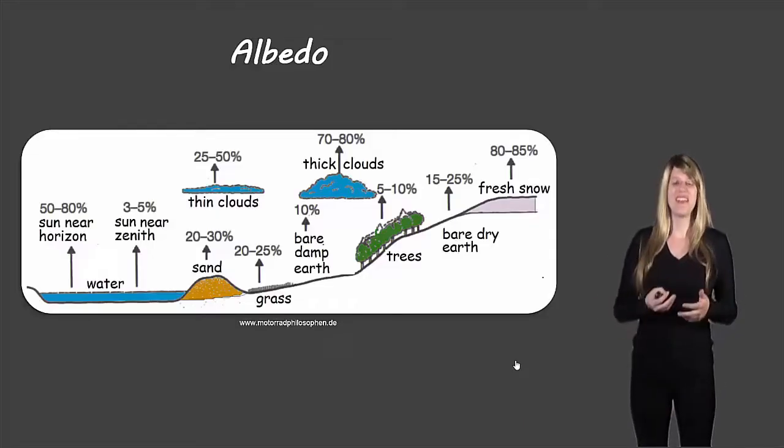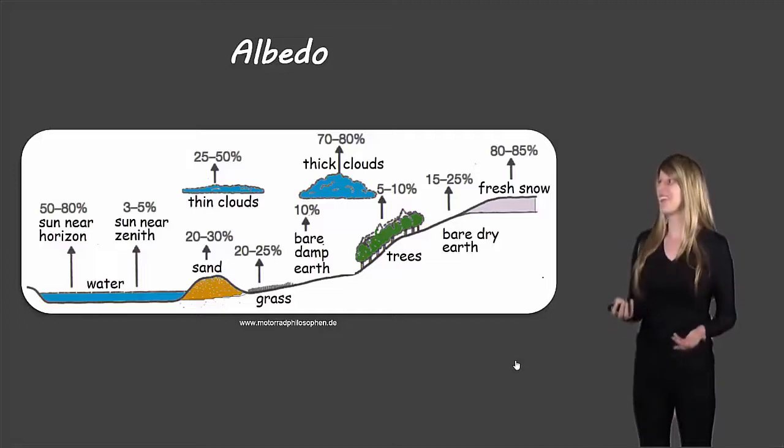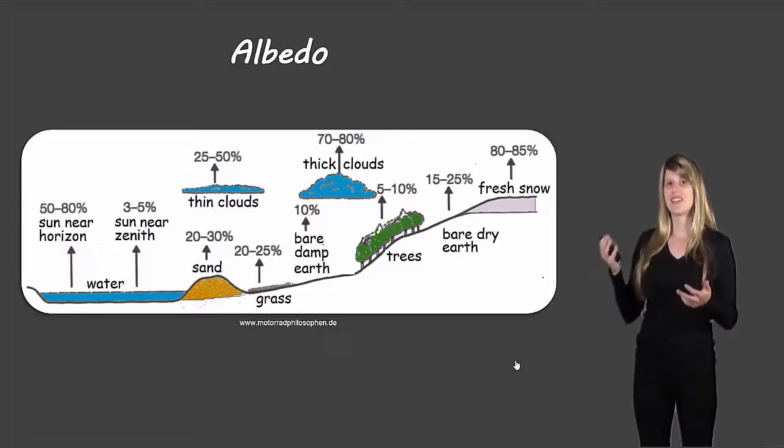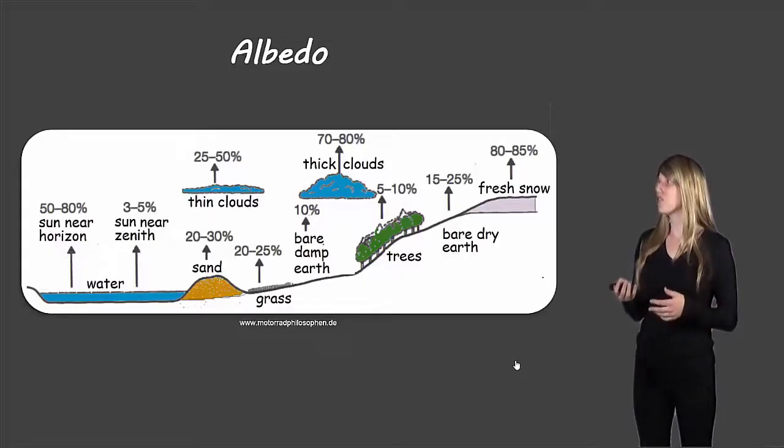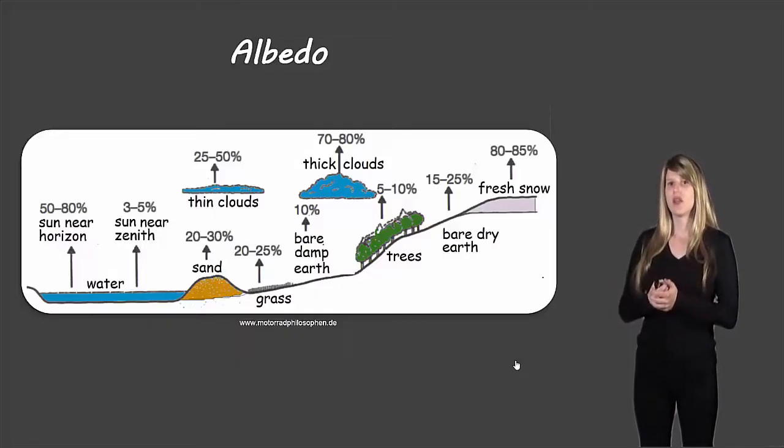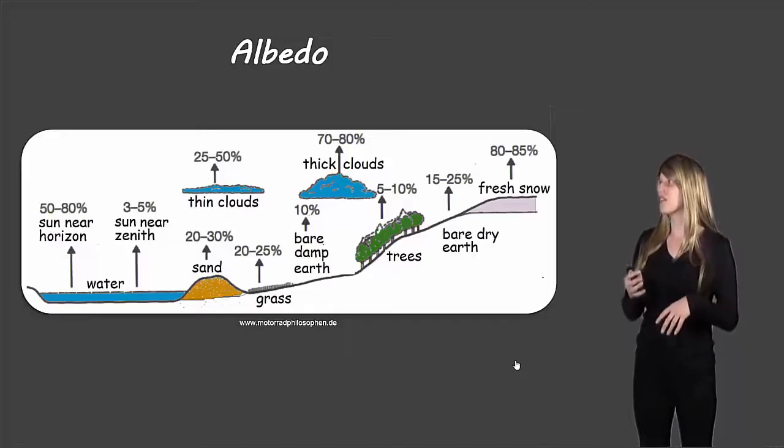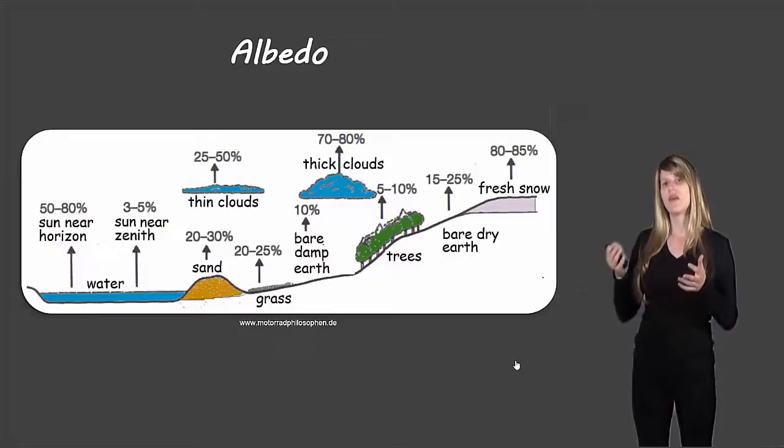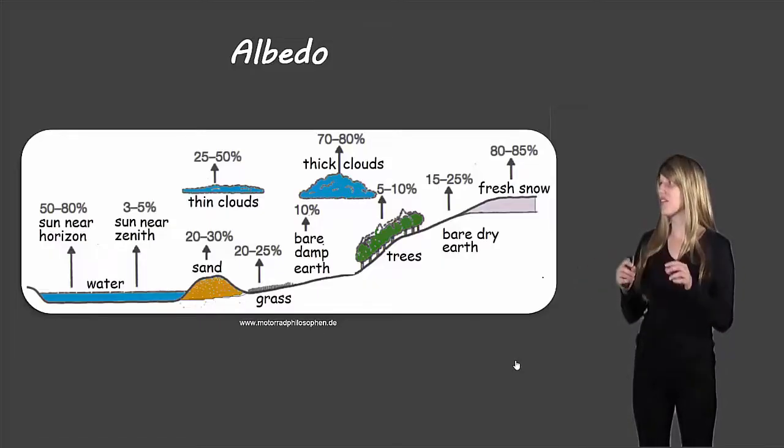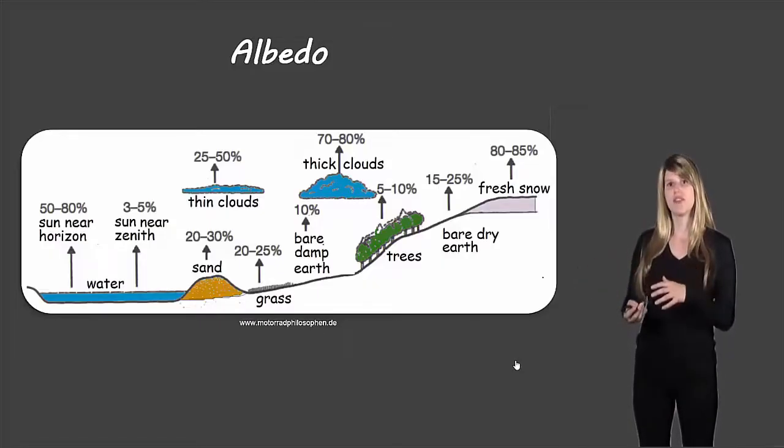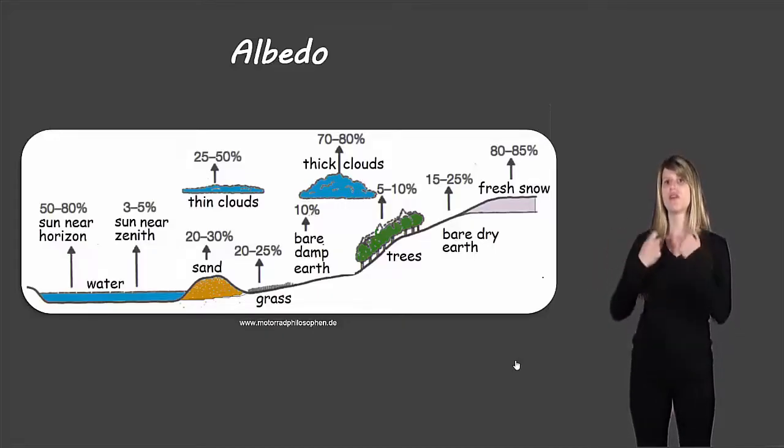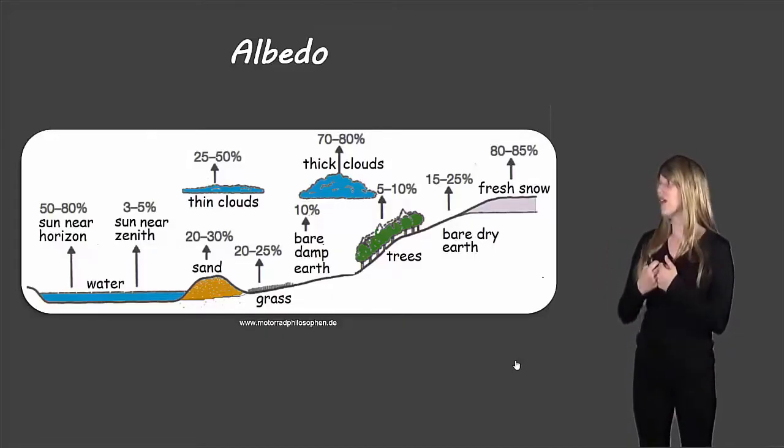If we take into consideration what this actually has to do with our Earth and our climate change unit, different surfaces and substances on Earth have different albedos. If you look at, for example, thick clouds versus thin clouds—if there's a lot of cloud cover, you can see that 70 to 80 percent of the sunlight is reflected. But if the clouds are very thin, only 25 to 50 percent of the light is reflected, which means more is absorbed onto the Earth.